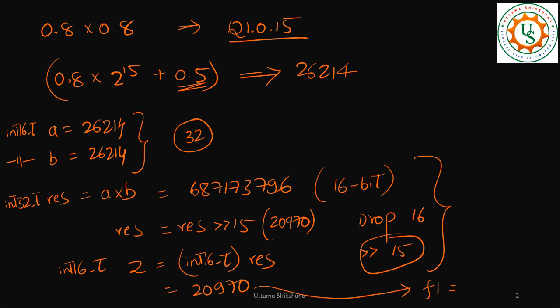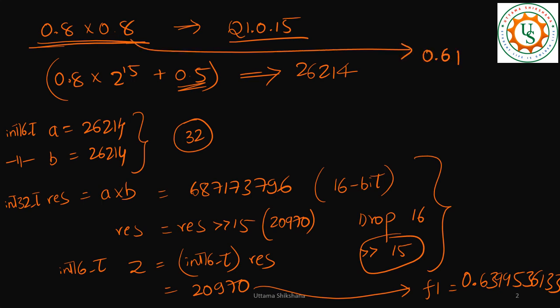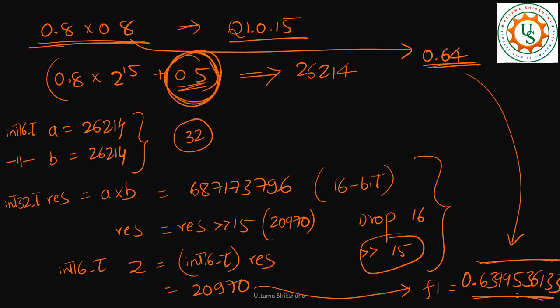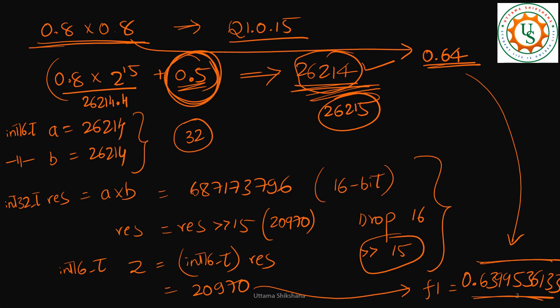Dividing 20970 by 2^15 gives 0.6399536133. But multiplying 0.8 × 0.8 should give 0.64 — so we did not get a very accurate result. The addition of 0.5 during float-to-fix conversion didn't help here because 0.8 × 2^15 + 0.5 = 26214.4, which did not round up to 26215. The precision loss occurred at the very beginning of the float-to-fixed conversion and carried through to the final result.